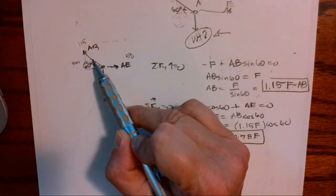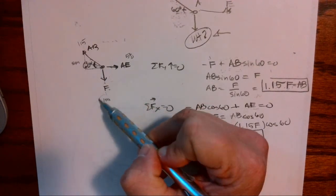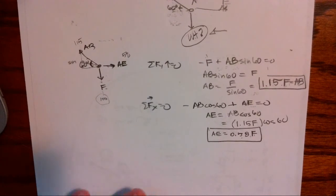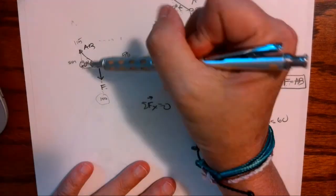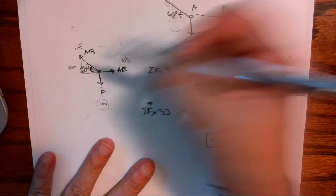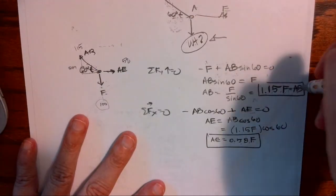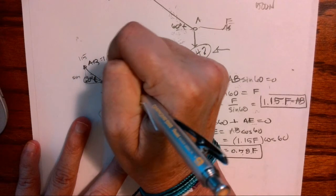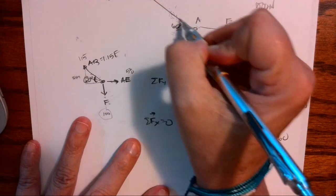So looking at this we can see that cable AB would be limiting the value that we can, the capacity is limited by this cable AB. Okay, so now that we know AB which we got to be 1.15 F, we can track that back up and look at joint B.